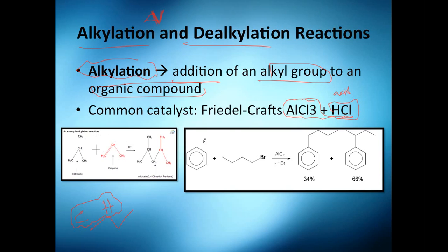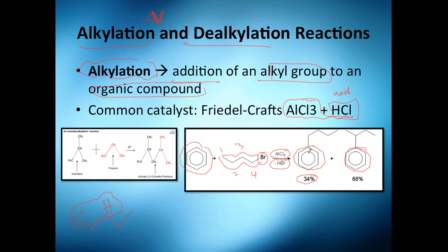For example, you have benzene — six carbons — and this molecule here which is a four-carbon bromoalkane. You add the catalyst in the presence of hydrogen bromide, and you will actually have two possibilities: the first isomer and the second isomer, both containing four carbons but arranged in two different structures.